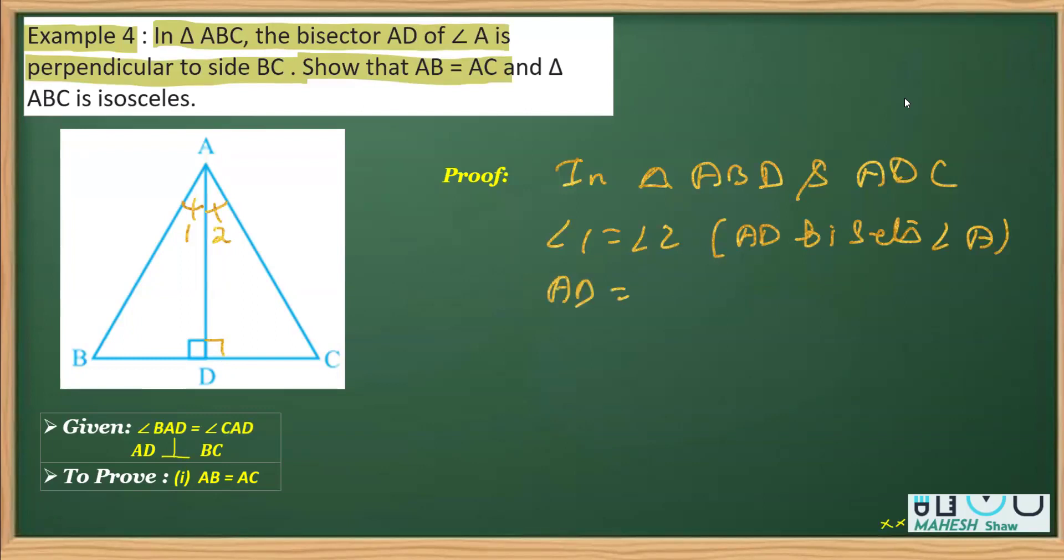Further, we have AD as common. AD is equal to DA, and that is a common side. You may simply write common. Further, these two angles, that is angle ADB, is equal to angle ADC, and the reason is each is 90 degrees.